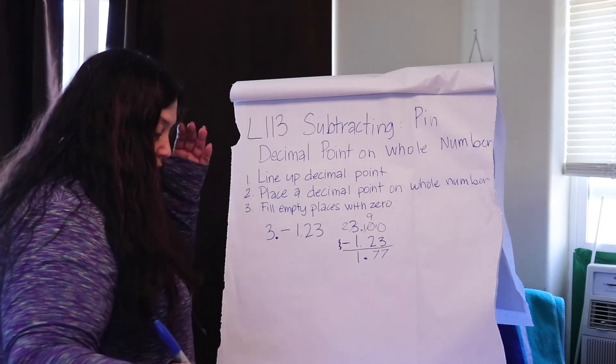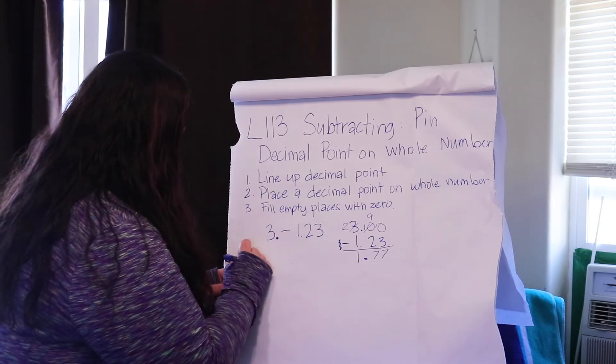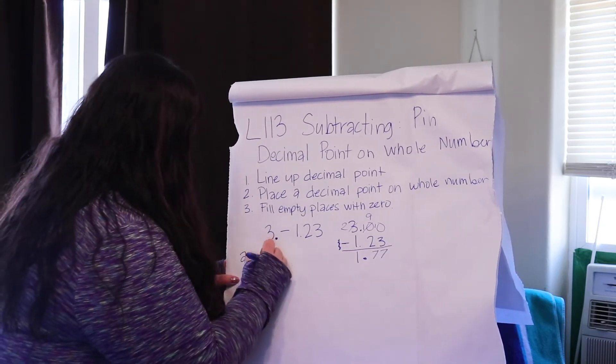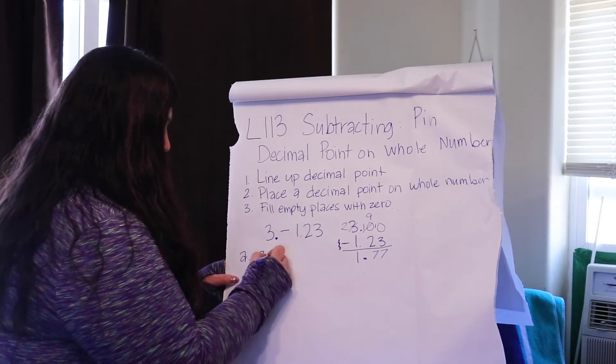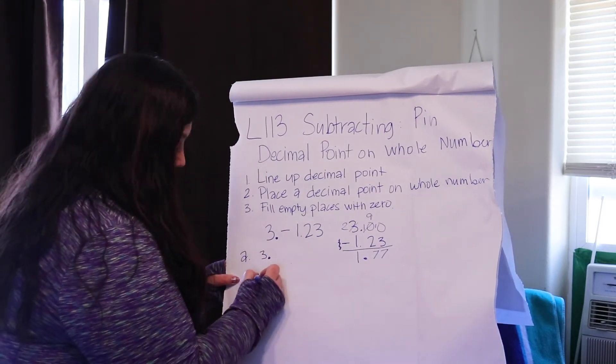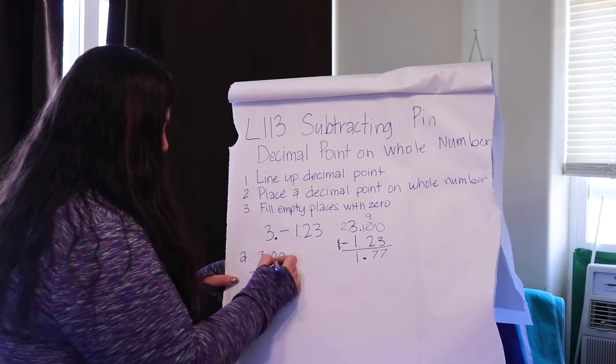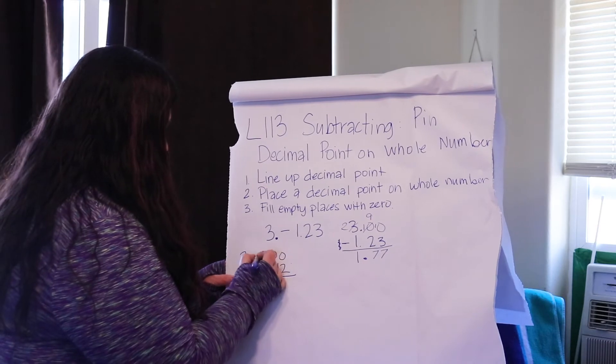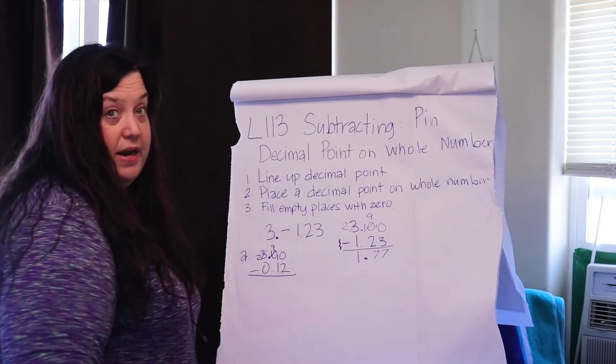Okay, so now it's time for our journal, and we're going to do some of our practice together. Let's take a look at A. We have 3, and where are we going to put the decimal for this? Very good, right after our whole number, and we're going to minus 0.12. Fill in your zeros and go ahead and subtract.